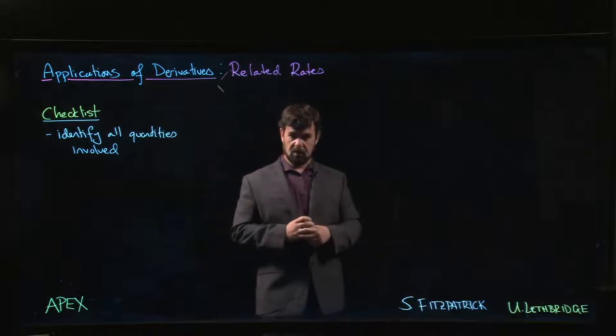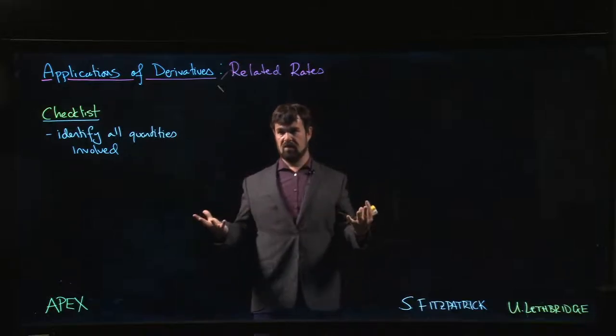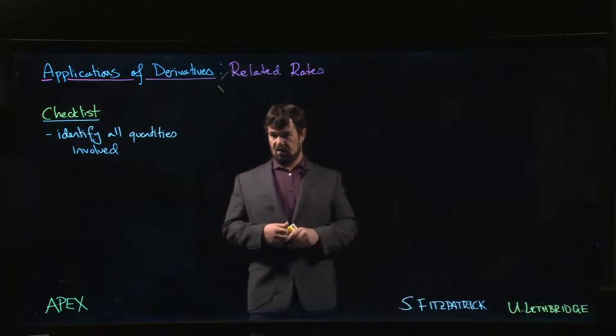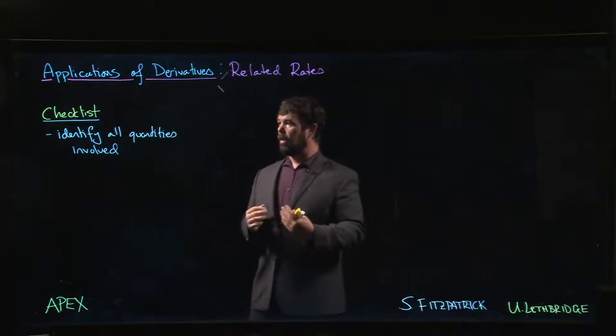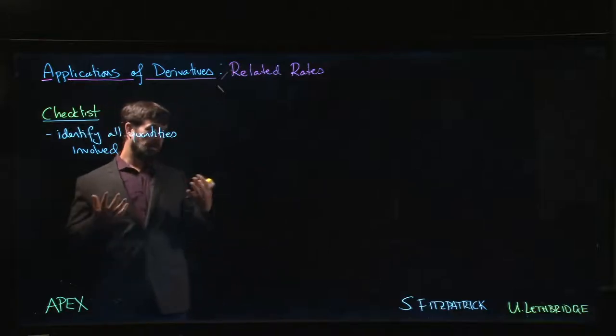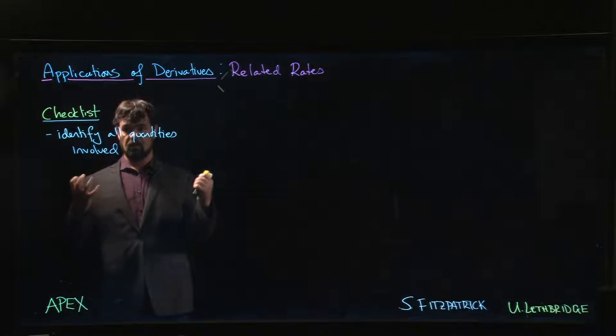For example, consider something like a circle. If you have a circle and the radius is changing, how does the rate at which the radius is changing affect the rate at which the circumference or the area is changing? We know how to establish relationships between these quantities, and then we can use calculus to establish relationships between the rates.